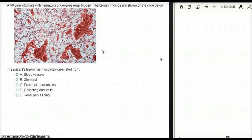This question deals with a 58-year-old male with hematuria who undergoes renal biopsy. The biopsy findings are shown on the slide below.